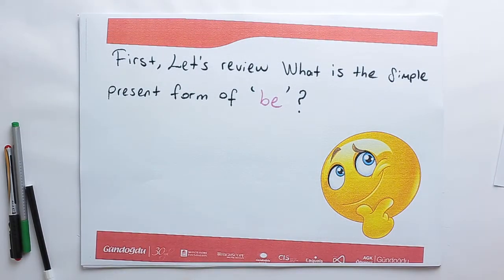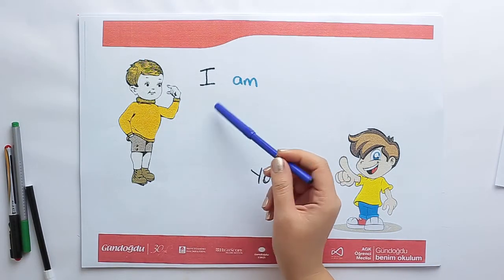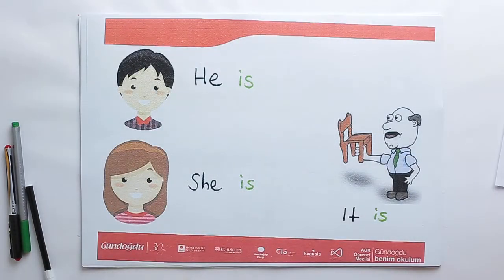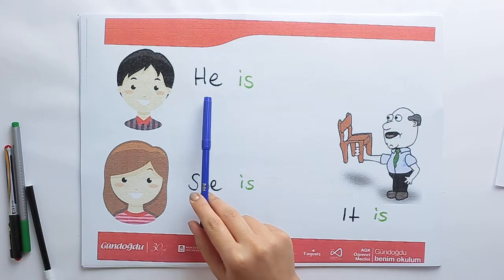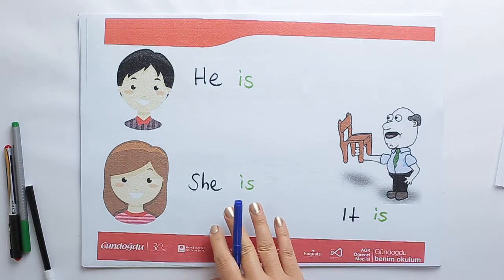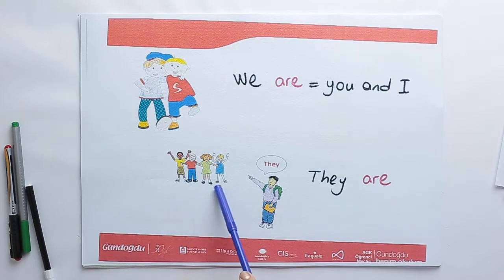First, let's review what is the simple present form of be. I am — I am a teacher. You are — you are a student. He is — he is tall. She is — she is happy. It is — it's a chair. We are — we are friends. And they are — they are children.